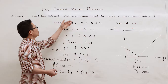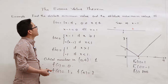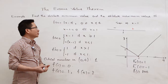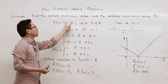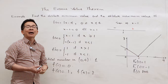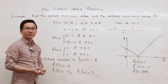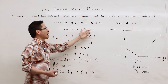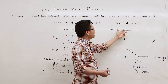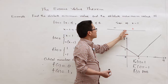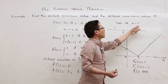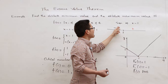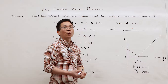To work on this problem, we will try to rewrite the function f as a piecewise defined function. To do so, we have to determine the sign of the expression under the absolute value, which is x minus 1. Note that x minus 1 equals 0 if and only if x equals 1. So the sign of x minus 1 is positive if x is greater than 1, and negative if x is less than 1.